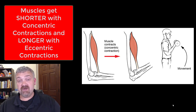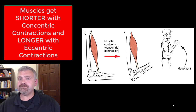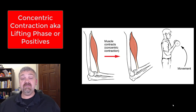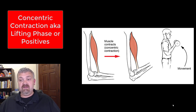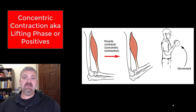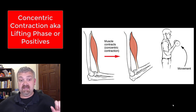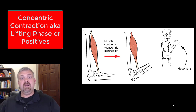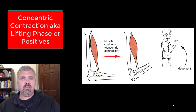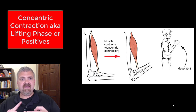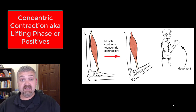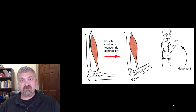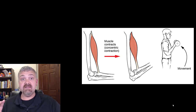Concentric contractions: muscles contract and get shorter. This would be called the lifting phase of a movement. So if the muscles are contracting and getting shorter, it's because — like in this situation — this man is lifting the weights, doing bicep curls, picking the weight up. Same thing as if you're doing a pushup: when you're pushing off the floor, that would be concentric contractions. These are also called positive. So the lifting phase and the positive phase are two terms you might see when talking about concentric contractions. When we talk about the action of a muscle, we usually are talking about a concentric contraction.